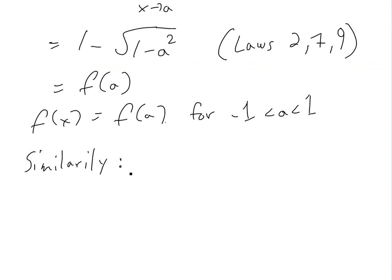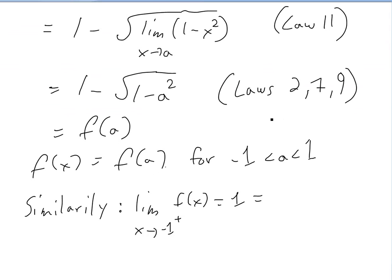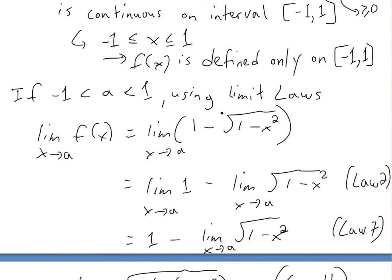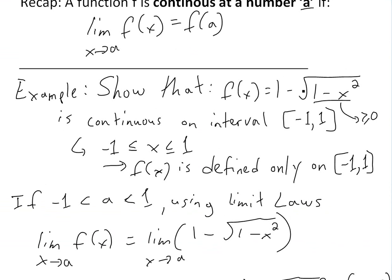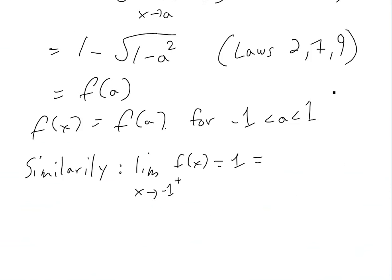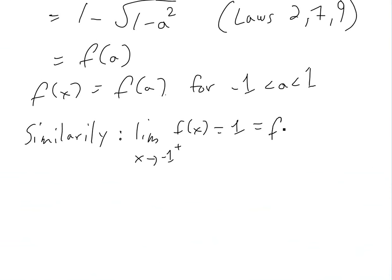Similarly, doing the same calculation, we can find that the limit as x approaches -1 from the right of f(x) equals 1. And if we plug x = -1 into the function, we get 1 - √(1 - (-1)²) = 1 - √(1 - 1) = 1 - 0 = 1. So the limit equals f(-1), meaning the function is continuous from the right at the endpoint -1.